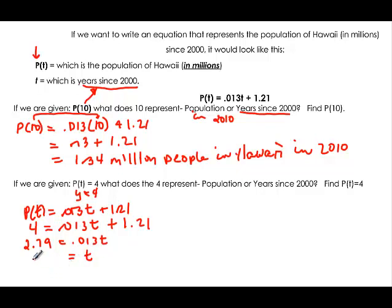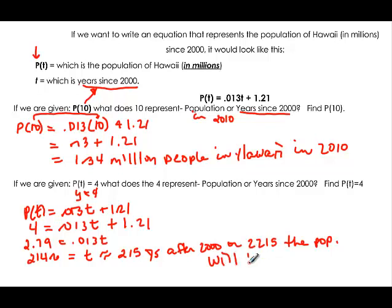We find that t is 214.6, or approximately 215 years after 2000, or year 2215, when the population will be 4 million.